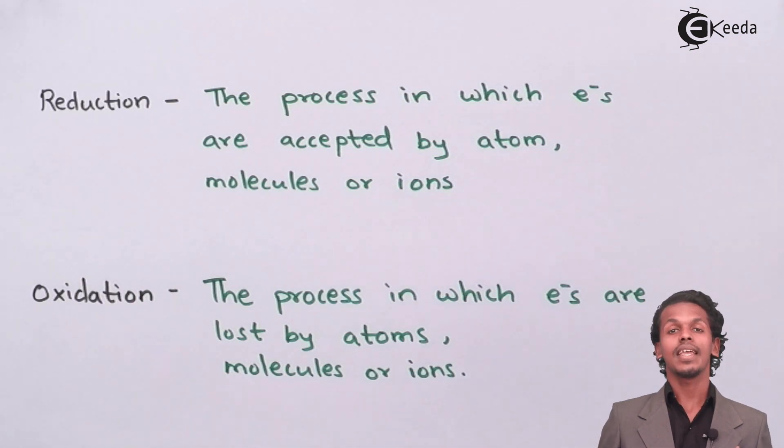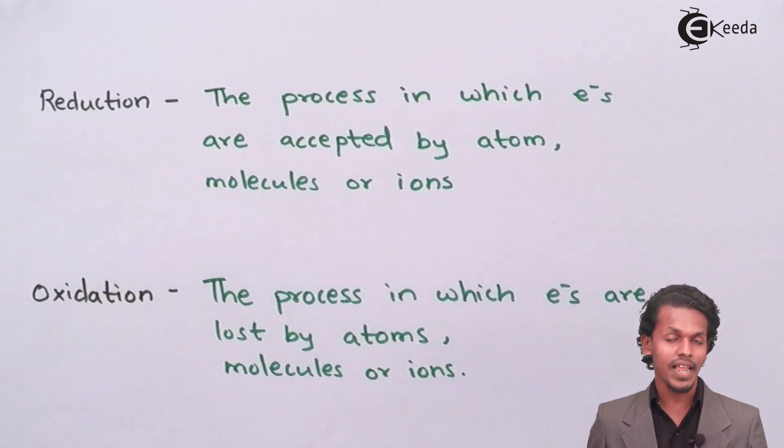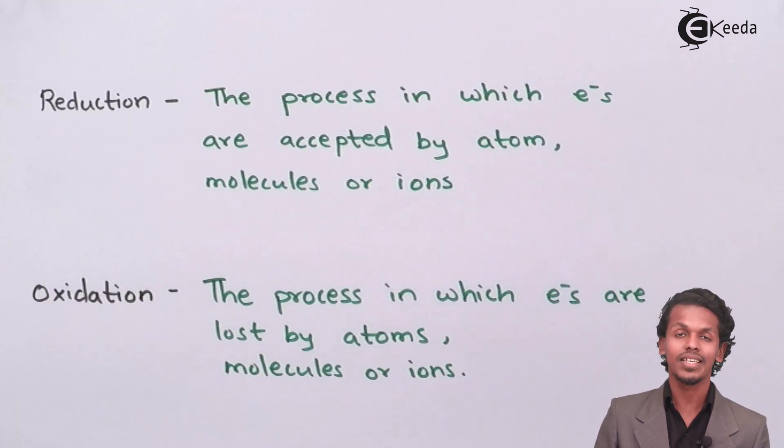When both reactions take place simultaneously in a reaction, then redox reaction is involved. Without redox reaction, electrochemistry is not possible. Let us see what is redox reaction with this example.